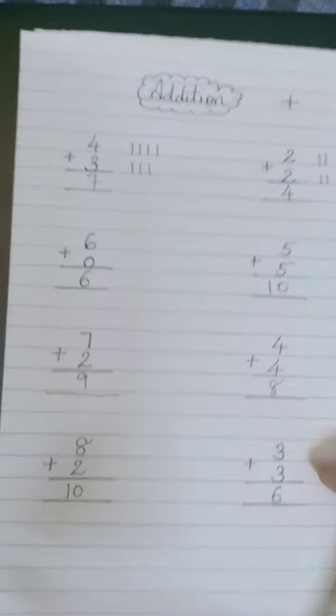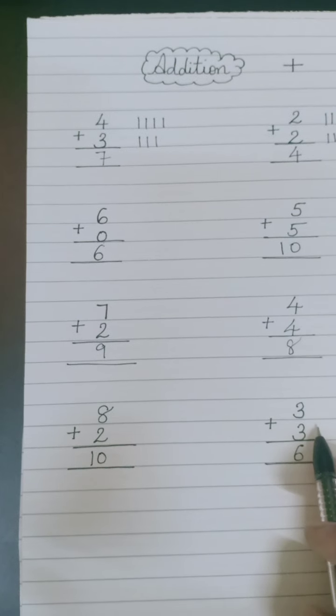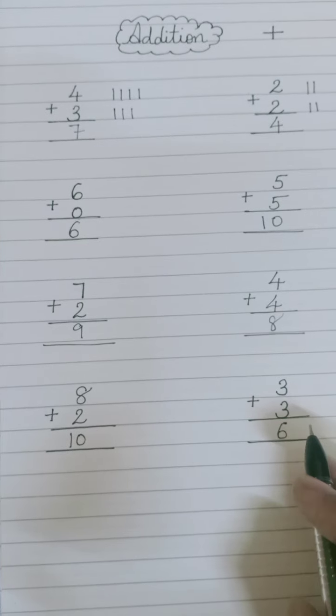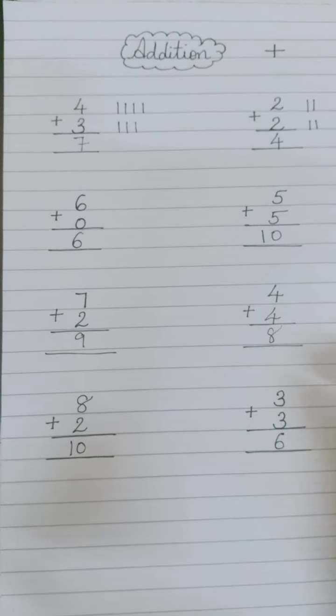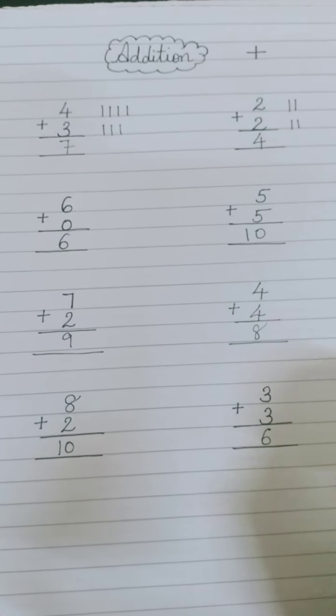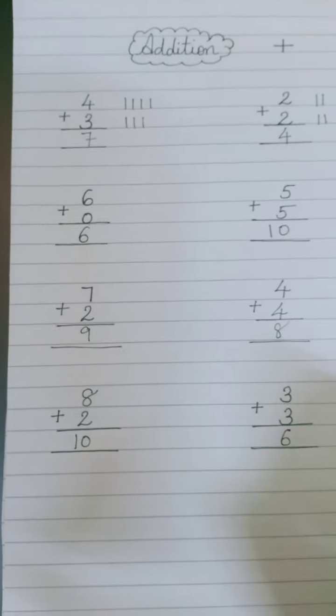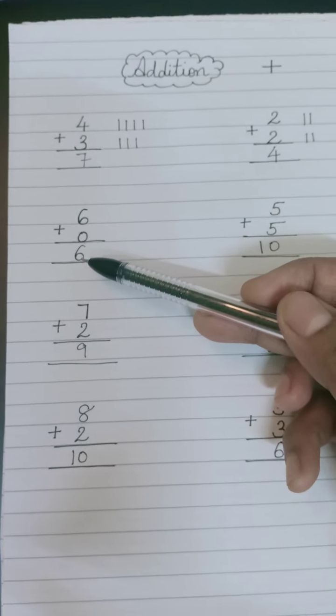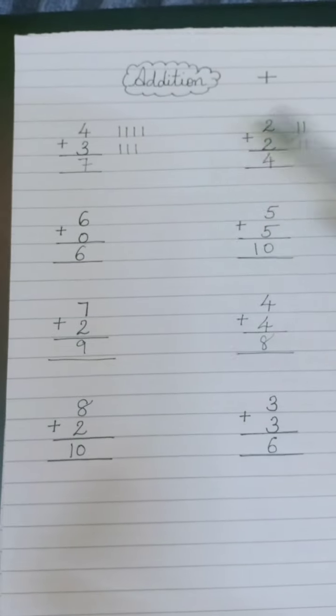Okay children, so you can do like this. You can keep the number which is big in your mind and the small number you can count on your fingers. Keep the big number in your mind and count the small number, then add them together. I hope you understood. Thank you for watching the video.